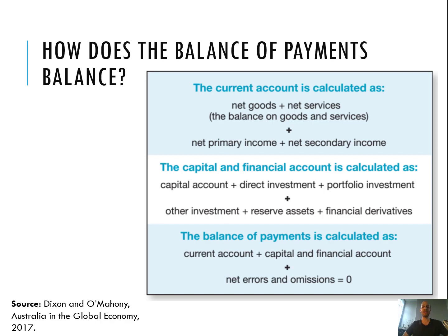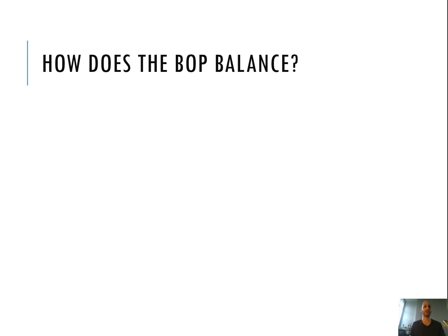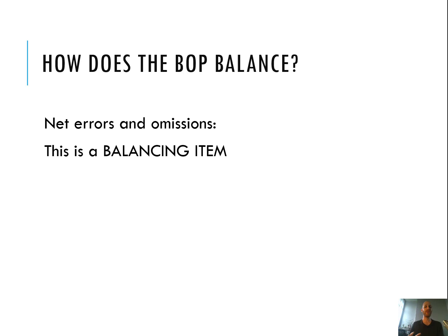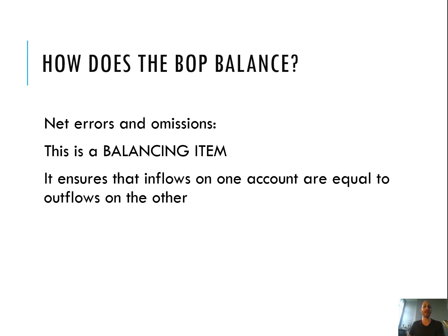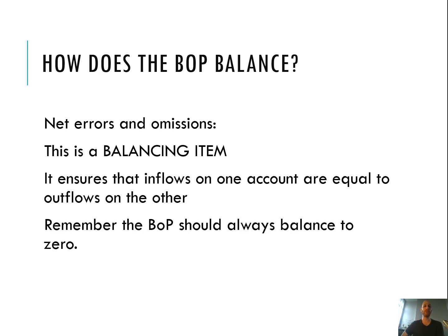To arrive at the final balance of payments, it will be the current account plus the capital and financial account plus net errors and omissions, which will equal zero. This is because the balance of payments measures inflows and outflows — inflows on one account should be matched by outflows on the other. But in reality that's not always the case, so we need net errors and omissions as a balancing item. It helps offset any discrepancies and ensures that overall the balance of payments balances to zero.